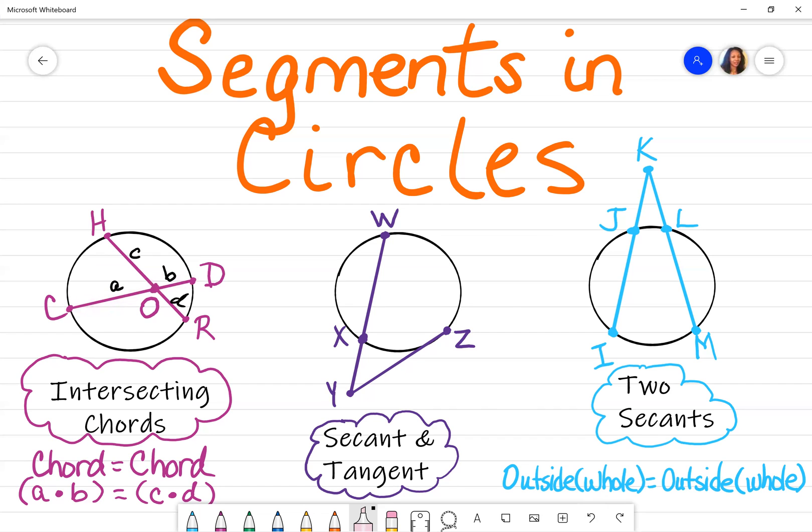And then I go to the other chord and I do the exact same thing. So this part of the chord times the other part of the chord will make up the other side of my equation and my formula. That's the formula you would use when you have two intersecting chords.